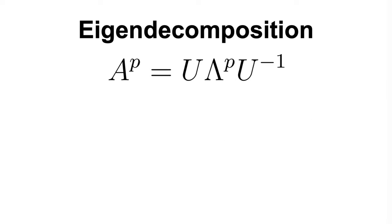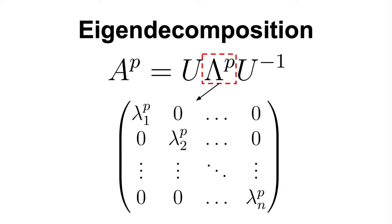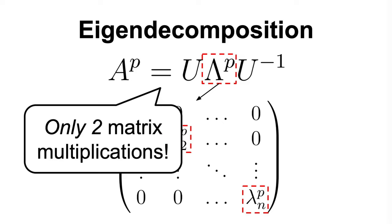And, because lambda is diagonal, we don't have to perform log 2 of p matrix multiplications, we just have to raise each term on the diagonal, the eigenvalues, to the power of p. If you ask me, that's a pretty amazing result. Because, in the end, instead of log 2 of p matrix multiplications, we compute just two matrix multiplications, U multiplied by lambda to the power of p multiplied by the inverse of U, for any p, no matter how large p is.